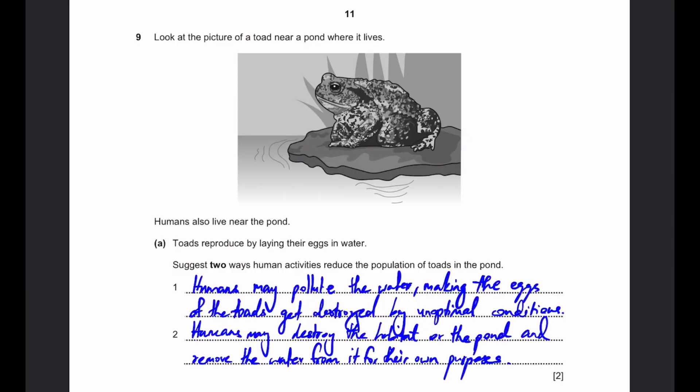Question 9. Look at the picture of a toad near a pond where it lives. Humans also live near the pond. Toads reproduce by laying their eggs in water. State two ways human activities reduce the population of toads in the pond. First of all, obviously, humans may pollute the water, making the eggs of the toads get destroyed by unoptimal conditions. That's the one obvious point. But the second one is a bit more indirect. Humans may destroy the habitat or the pond and remove the water from it for their own purposes. For example, some humans might just shower in the pond, or some humans might just wash their clothes, like that. So some humans might destroy the habitat like that. That's another way that human activities could reduce the population of toads.